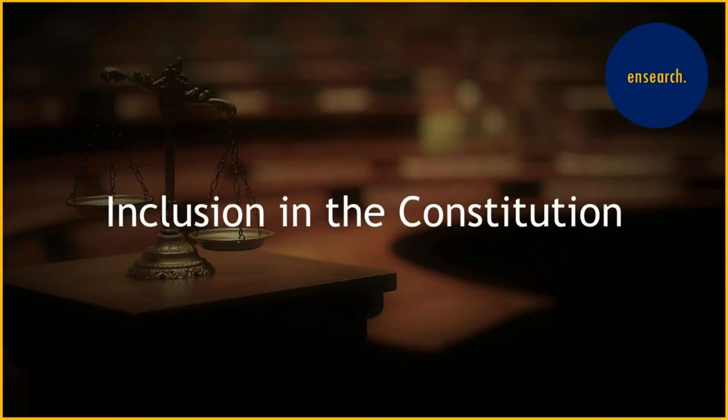Part 3 of the Constitution guarantees six categories of fundamental rights: Right to Equality (Articles 14-18), Right to Freedom (Articles 19-22), Right Against Exploitation (Articles 23-24), Right to Freedom of Religion (Articles 25-28), Cultural and Educational Rights (Articles 29-30), and Right to Constitutional Remedies (Article 32).